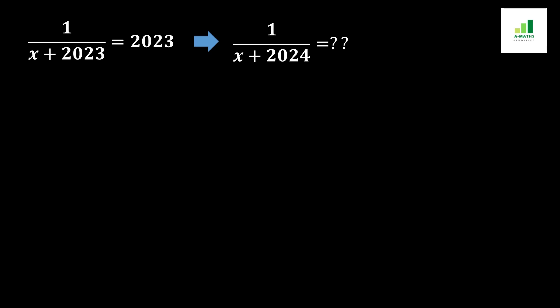Welcome to AMS. Today in this video we are going to solve a question. The question is: 1 over x plus 2023 equals 2023, which is a given equation, and 1 over x plus 2024 is our target equation. By using this equation we should find the value of this equation.